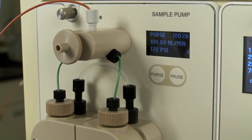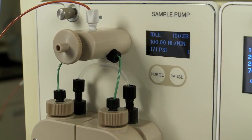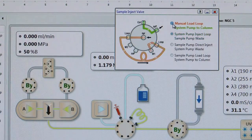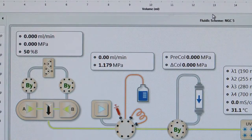To stop the purge, press the faceplate button. Select Manual Load Loop on the Inject Valve faceplate and close the faceplates. The sample pump is now purged and ready for manual control.